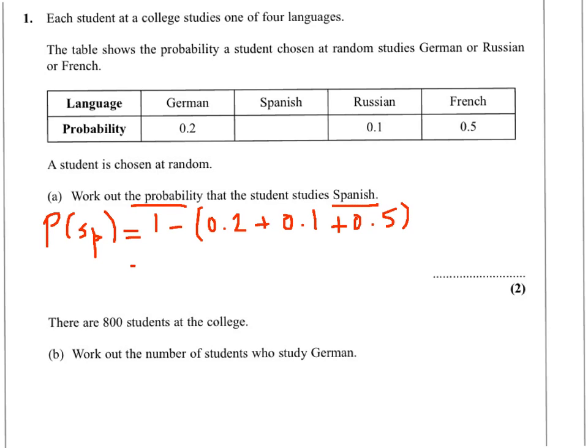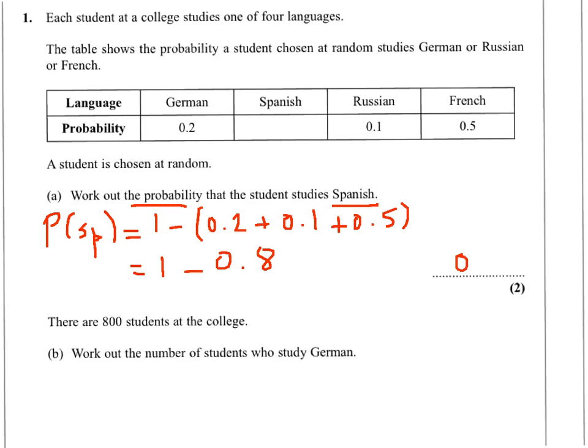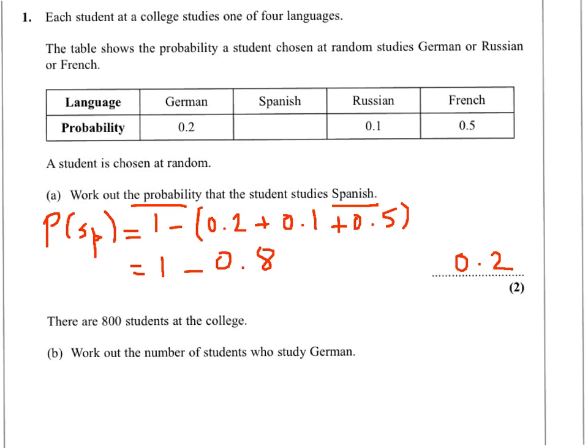This will give us 1 take away 0.8. Therefore the answer would be 0.2.